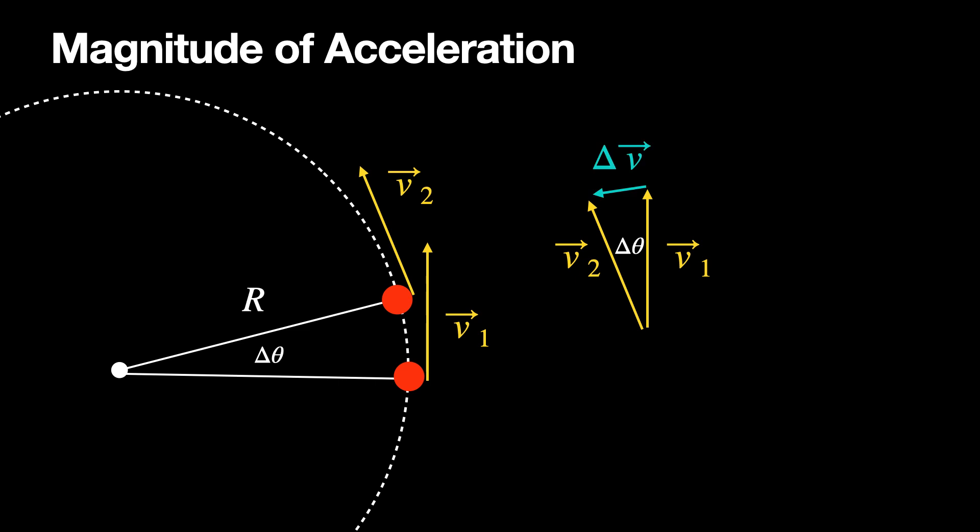When we have two vectors starting at the same location, the delta vector — the change in vector — goes from the end of the first vector to the end of the second vector. So delta V points that way. Moving that vector back over to the circle, you can see it's pointing towards the center. So the change in velocity direction, when moving in a circle, is towards the center of that circle.